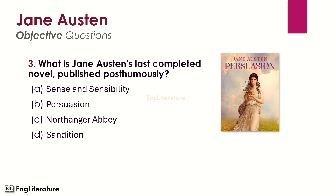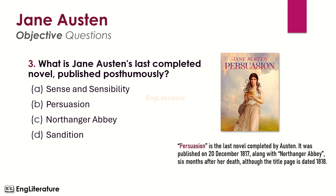What is Jane Austen's last completed novel published posthumously? Persuasion is the last novel completed by Austen. It was published on 20th December 1817 along with Northanger Abbey, six months after her death, although the title page is dated 1818. The right option is number B — Persuasion is Austen's last completed novel published posthumously.